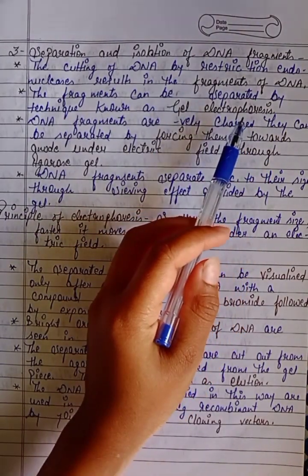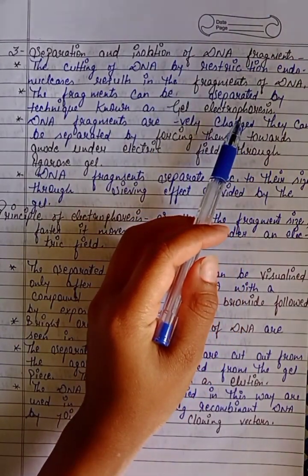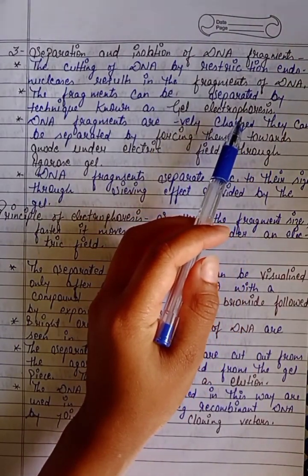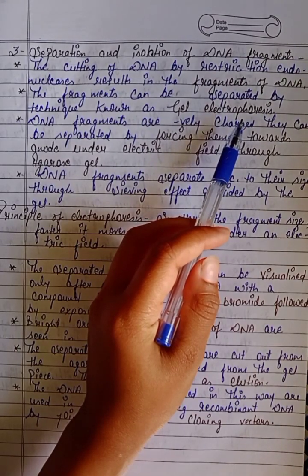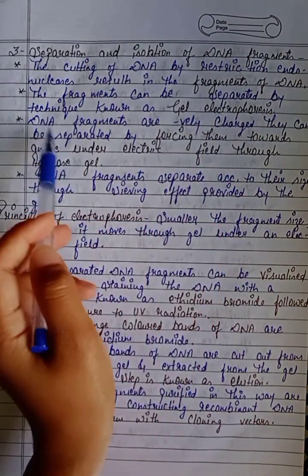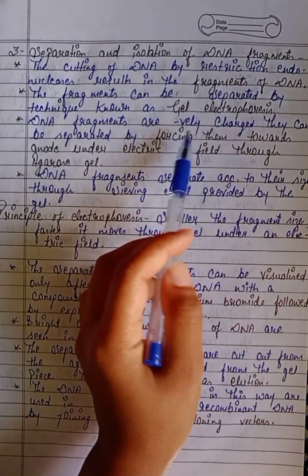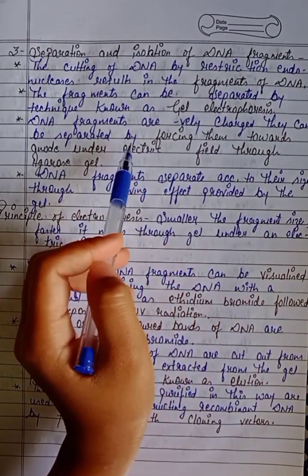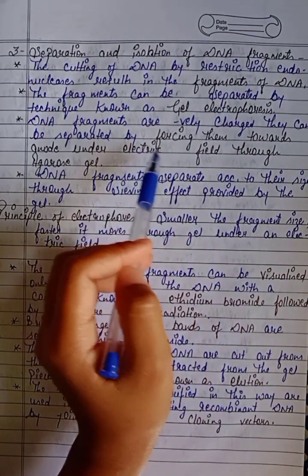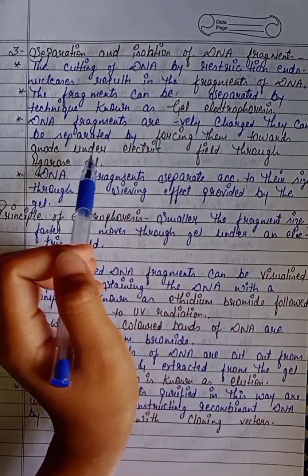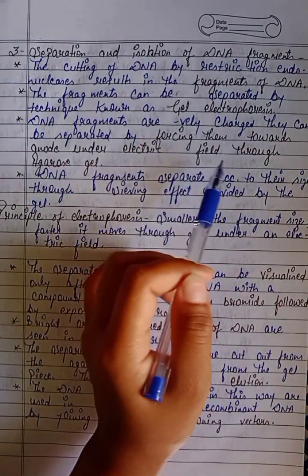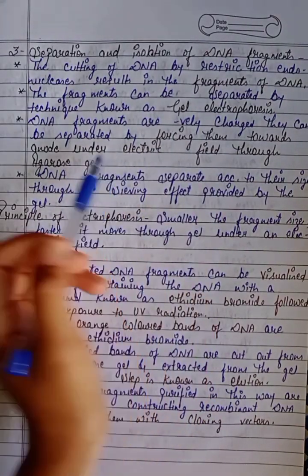To separate these DNA fragments, we use a technique called gel electrophoresis. DNA fragments are negatively charged. They can be separated by forcing them towards the anode under an electric field through agarose gel.